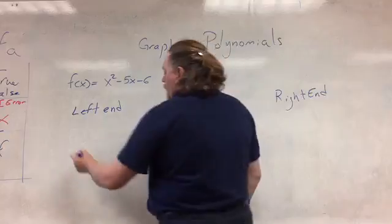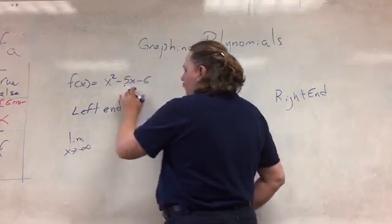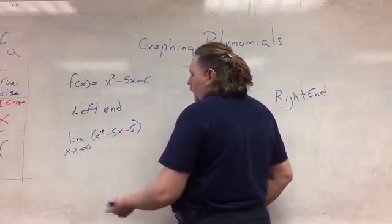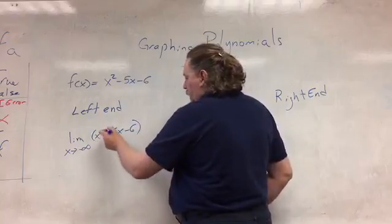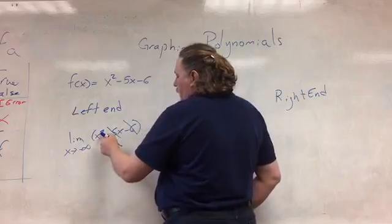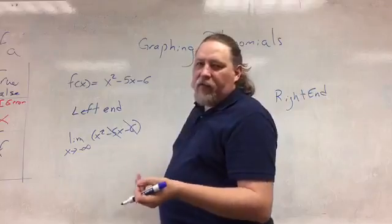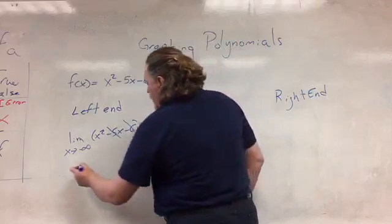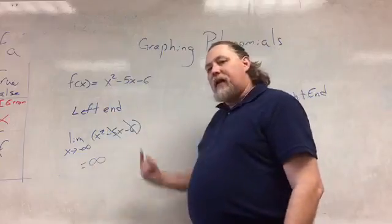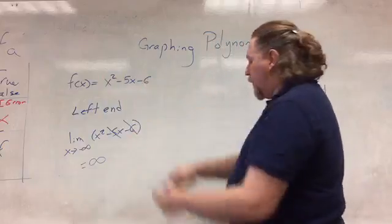First, the left end. I take the limit as x goes toward negative infinity of x squared minus 5x minus 6. Only worry about the largest power — you can ignore the others. So I have the limit as x goes to negative infinity of x squared. That's negative squared; negative times a negative is a positive. So our limit here is infinity — as I follow this graph to the left, it goes upward.